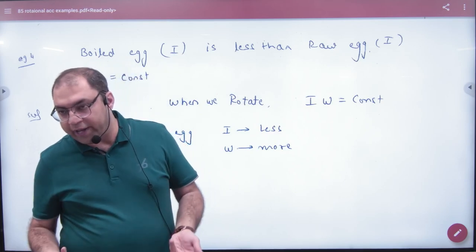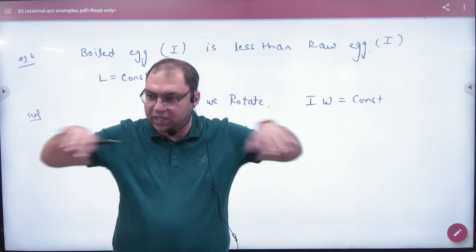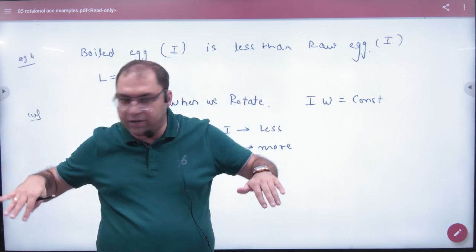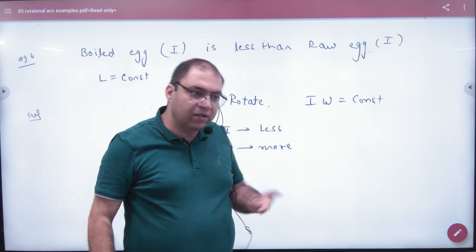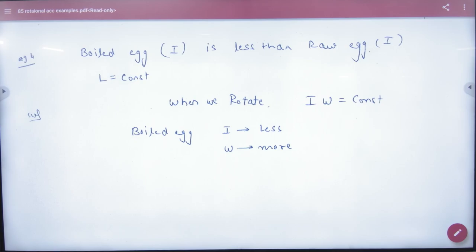The raw egg is in liquid form. When it goes to the boundary, all the liquid goes up and I increases. If I increases, then omega will be less, it will not be able to spin properly. So check it out, raw egg or boiled egg, what will spin will be boiled egg. Omega will be more.